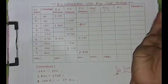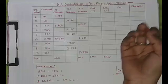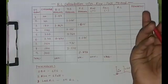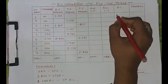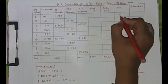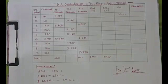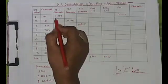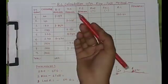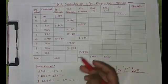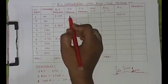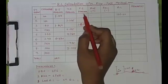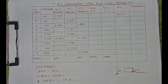In every leveling method you have a known RL point — that could be a benchmark, temporary benchmark, or permanent benchmark. Here I am taking my benchmark RL as 100. The backsight reading is the first staff reading taken at any instrument setup. Intermediate sight reading is any reading other than backsight and foresight. Foresight reading is the last staff reading taken with that instrument setup.